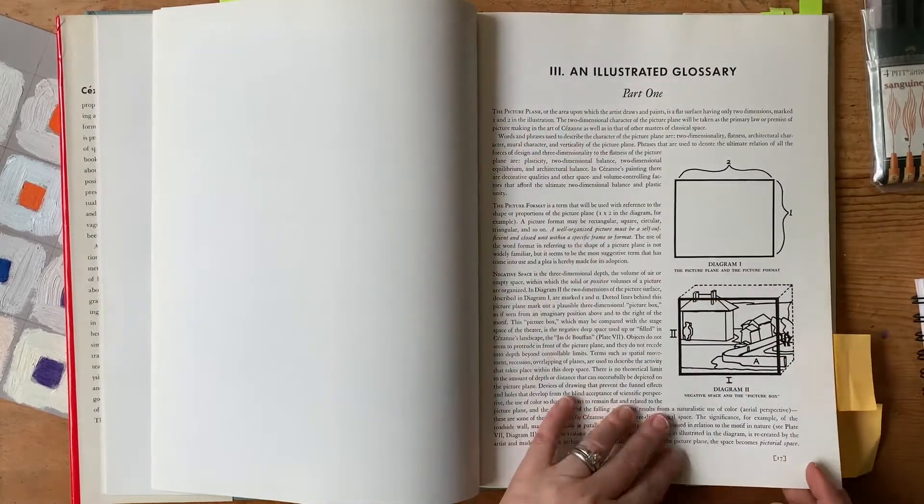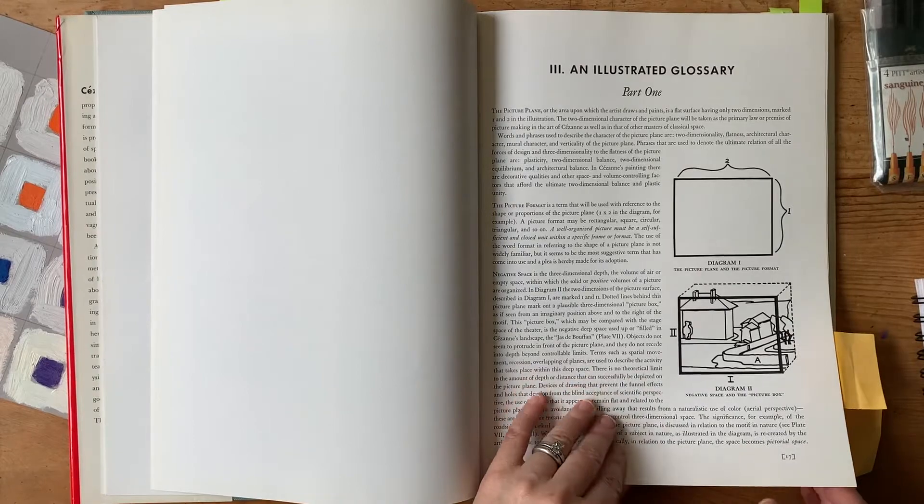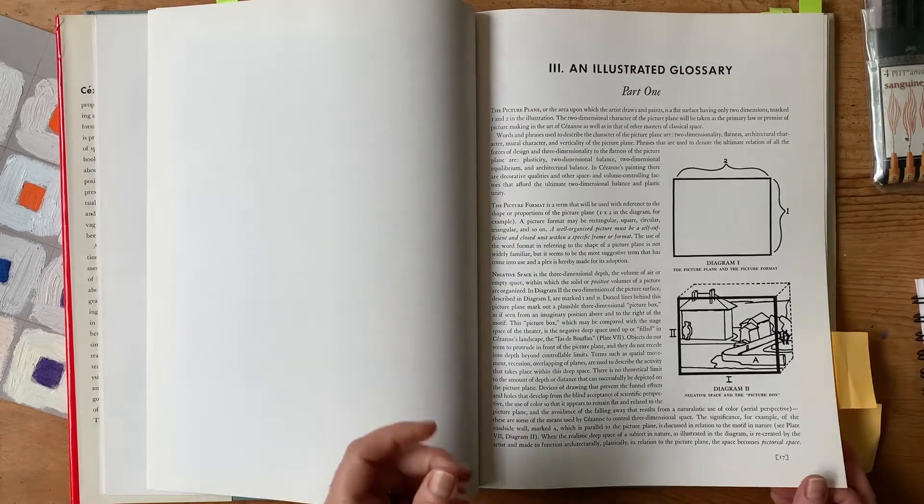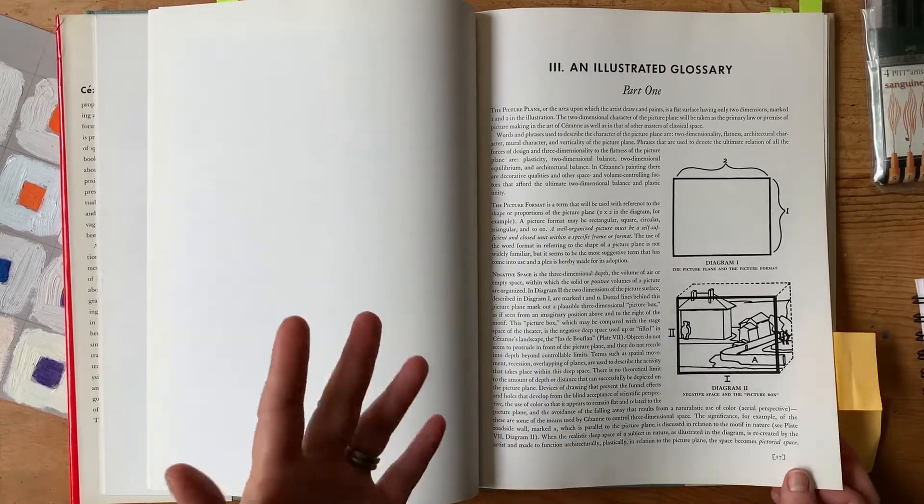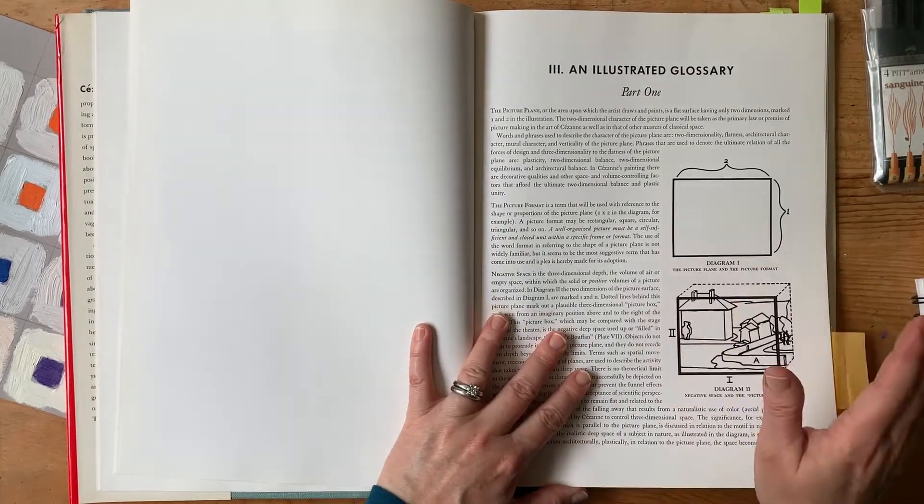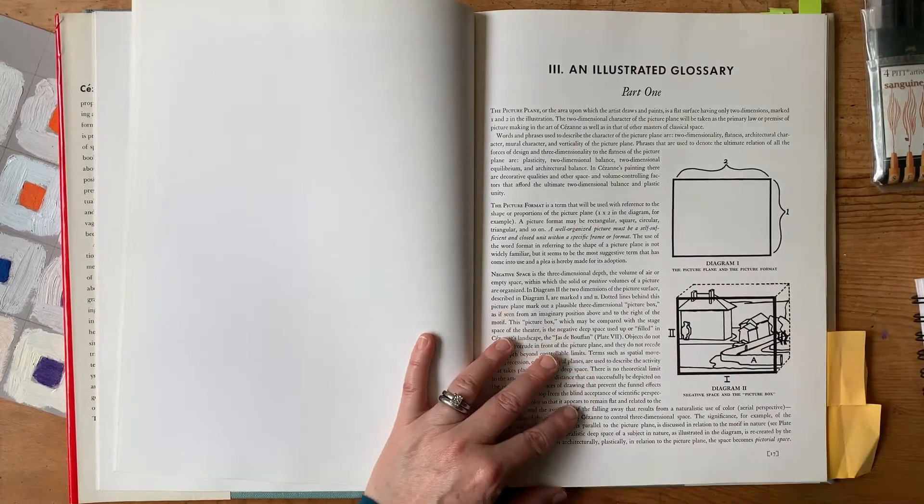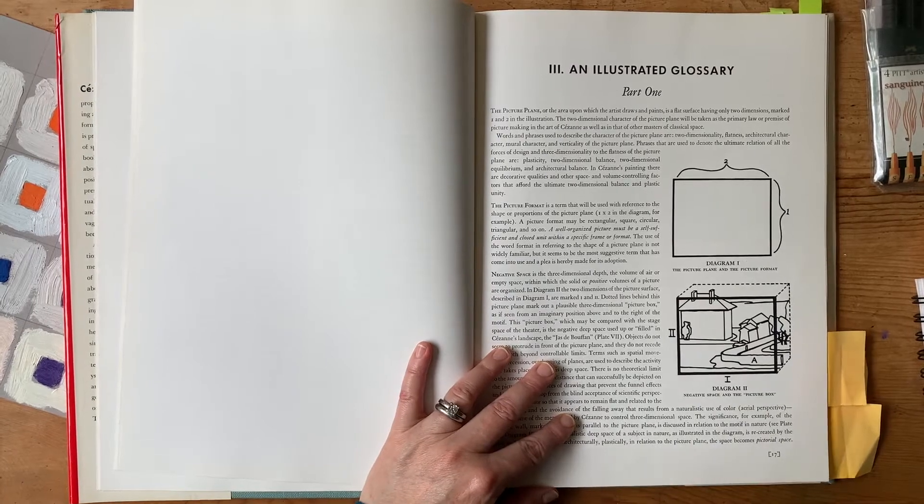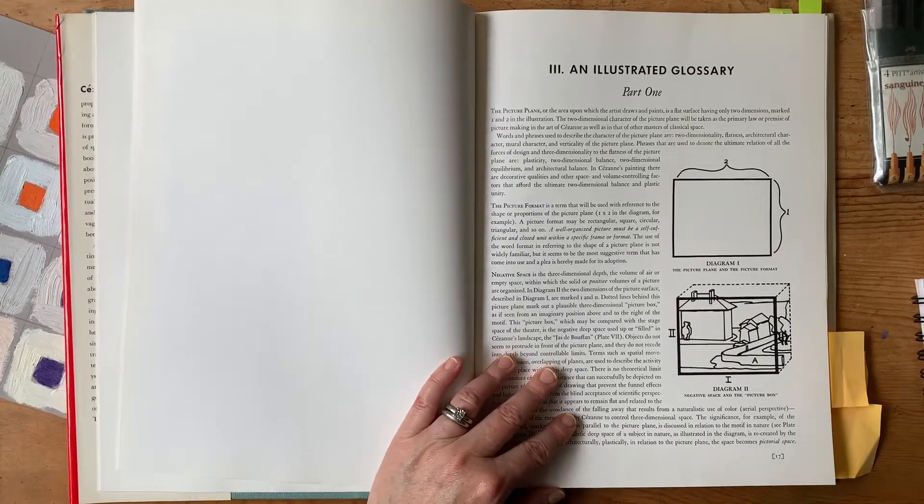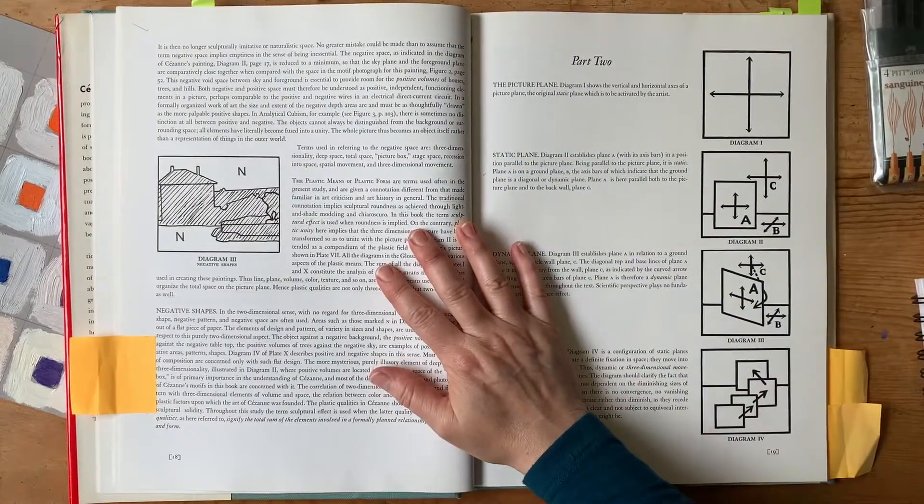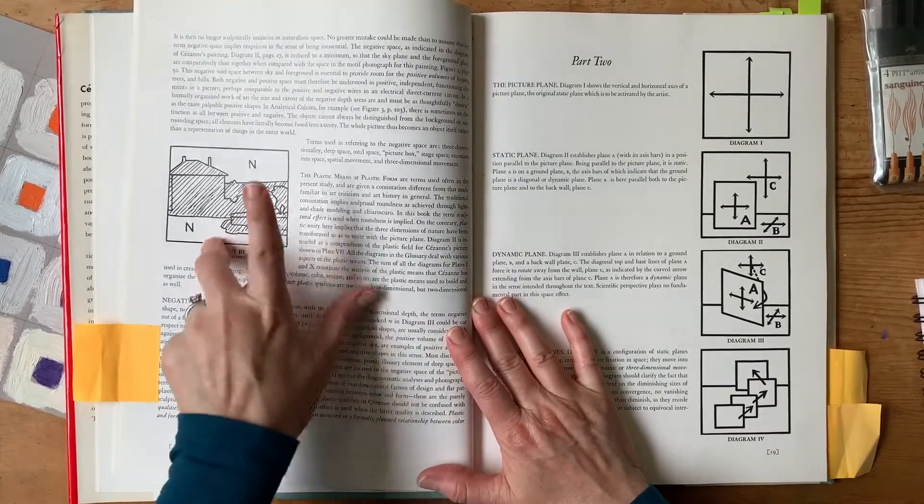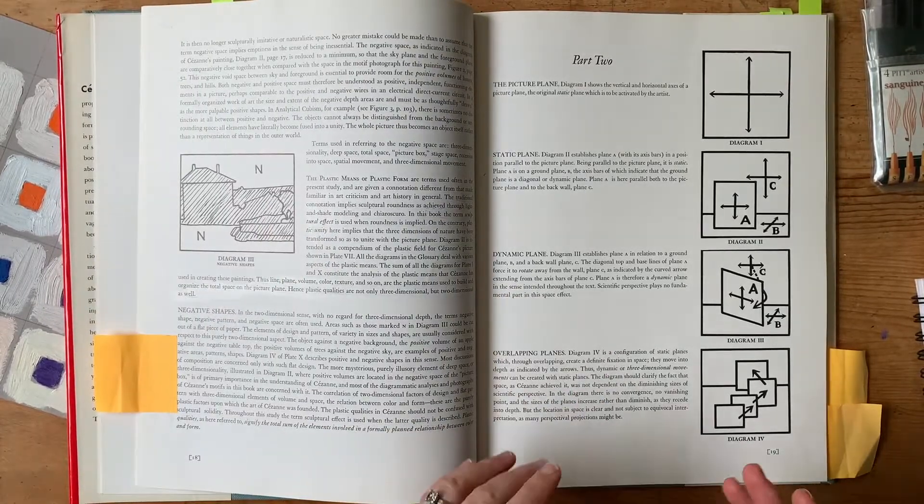And being an artist, I absolutely love that it's an illustrated glossary. It defines everything, all of the simple terminology that we use in art when we're specifically talking about painting composition, like your picture plane and your picture format, and then negative space, and that idea of taking a three-dimensional view and collapsing it into a two-dimensional painting. And then of course, you have the ideas of your negative shapes versus your positive shapes.